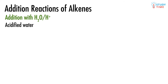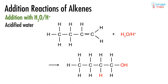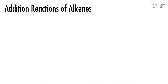Mixing any alkene with acidified water forms an alcohol as the product. For example, but-1-ene reacting with acidified water: the H₂O is split up — an H atom gets added to one carbon and the OH gets added to a different carbon atom. There are also major and minor products discussed in a future video, so for now focus on the mechanism.